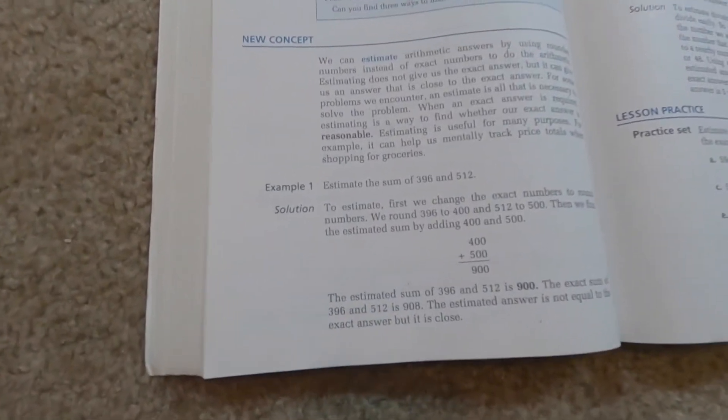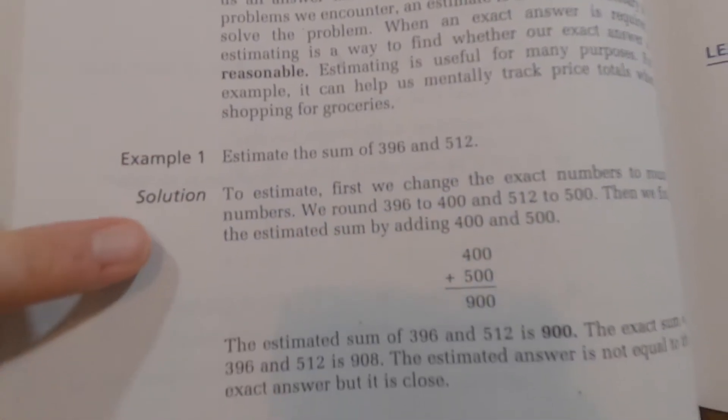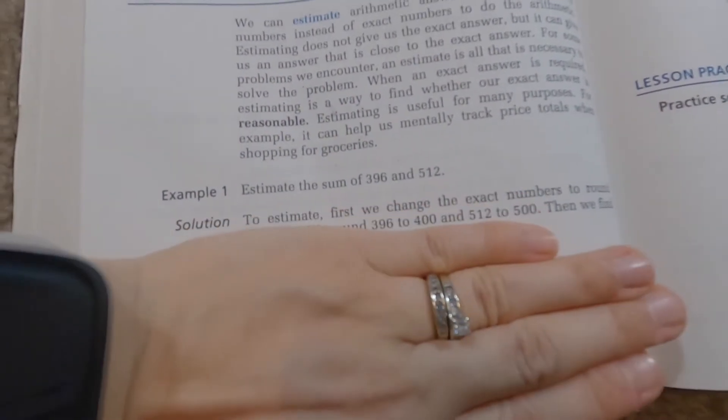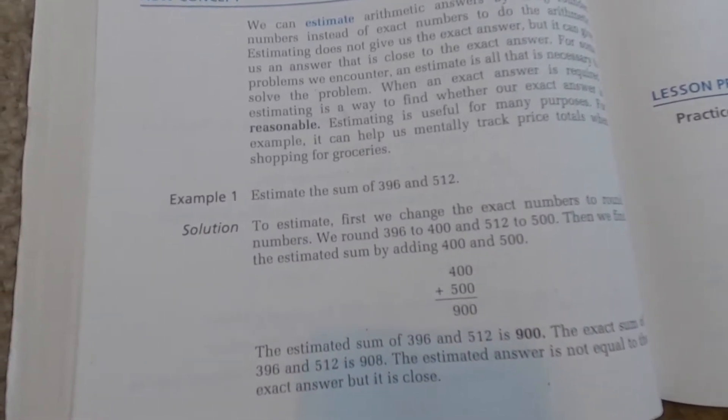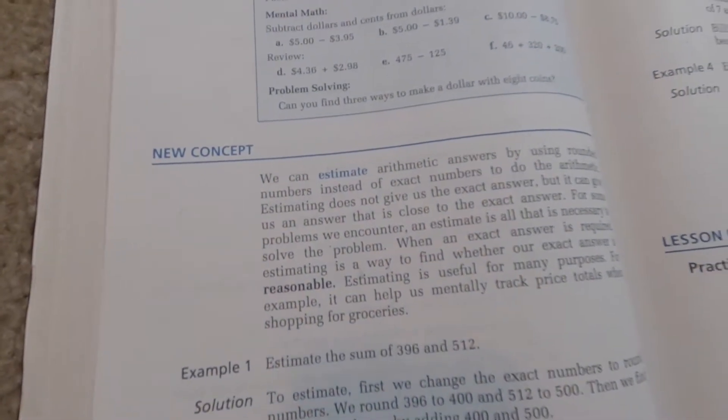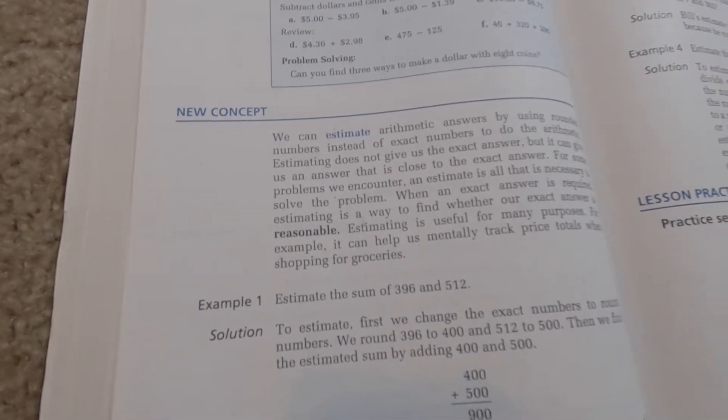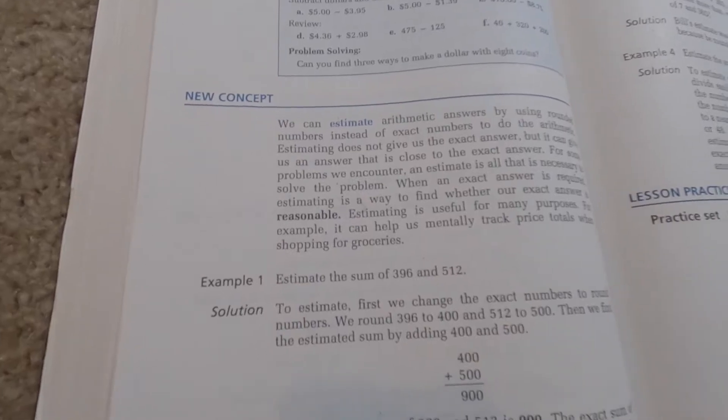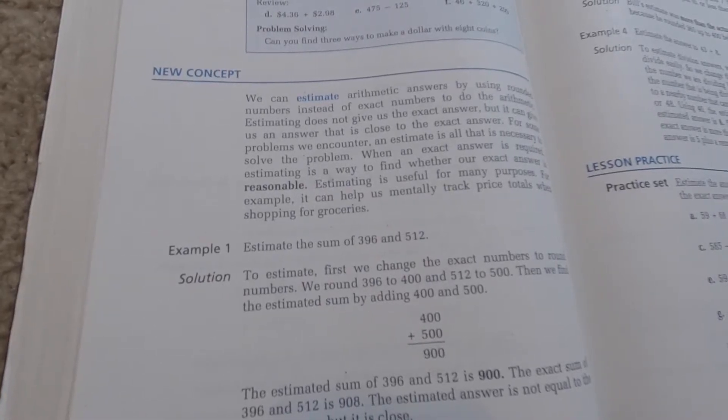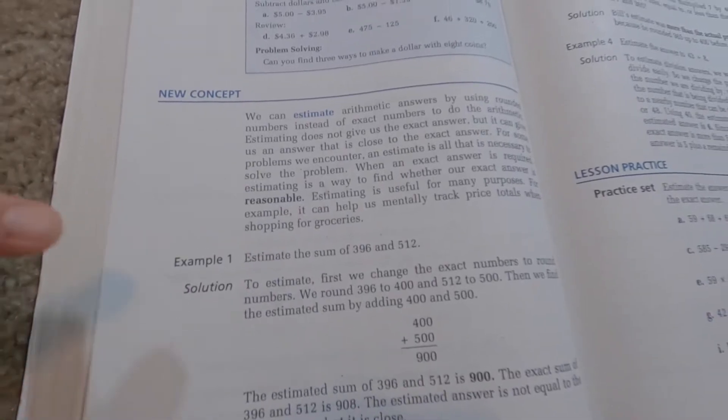So at this point, I just read to them and then we go through these examples where it is illustrating the concept that we read about. A lot of times I will cover up the answer so that he doesn't see it and he can kind of work through it on his own. So this is the point at which I just read it through it with him. We can estimate arithmetic answers by using rounded numbers instead of exact numbers to do the arithmetic. So we can use an estimate to make sure when we're adding something, we're like, well, does it make sense? Is that in the close enough number? Want to kind of check what we've done.